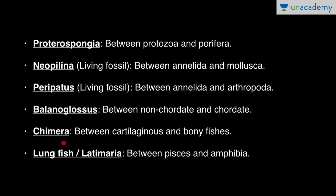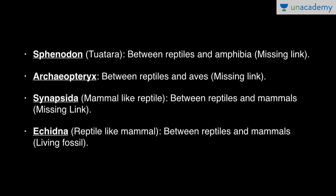Chimera, also known as ghost fish or rabbit fish, is a connecting link between cartilaginous and bony fishes. Lungfish or Latimeria is a connecting link between Pisces (fishes) and amphibians. Sphenodon, also known as Tuatara, is a connecting link between reptiles and amphibia and is a missing link — that is, a fossil connecting link.